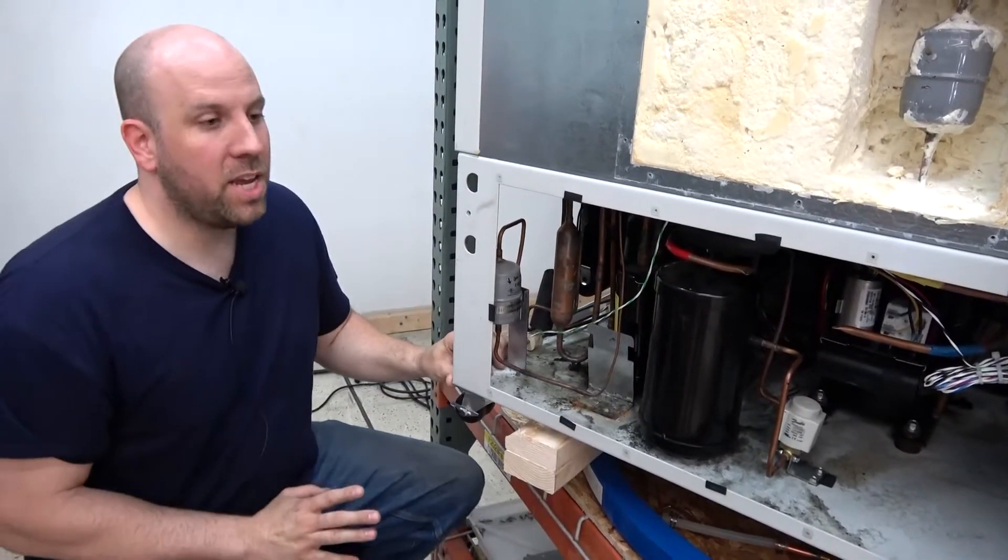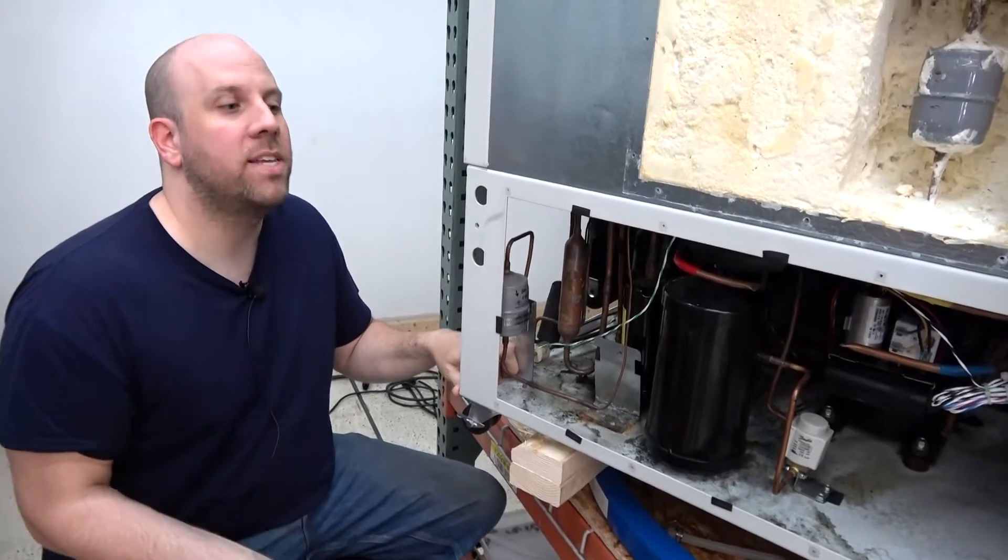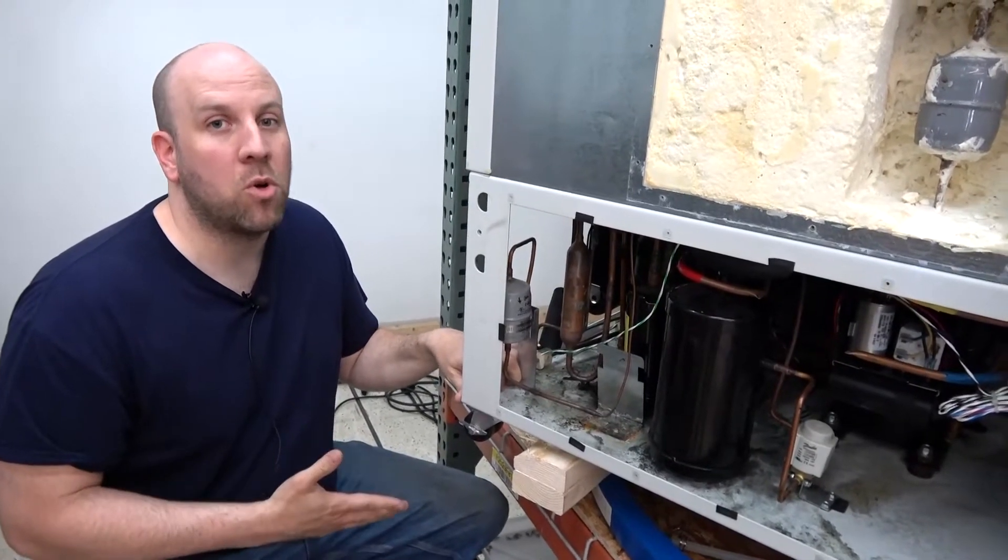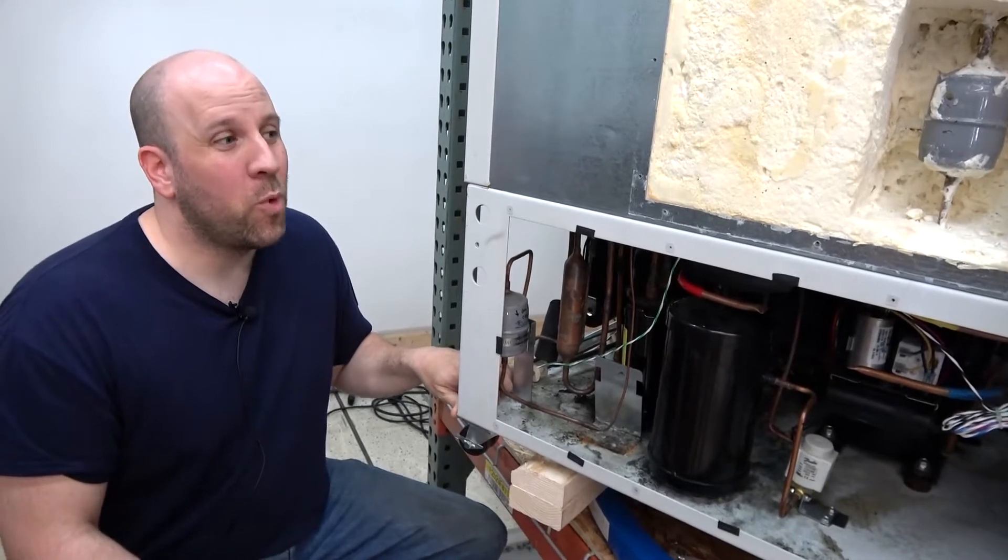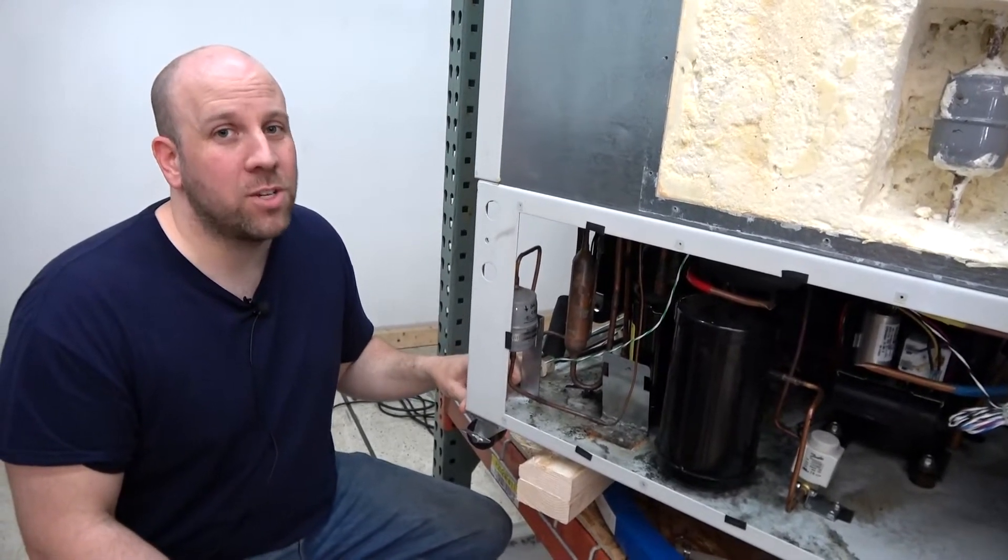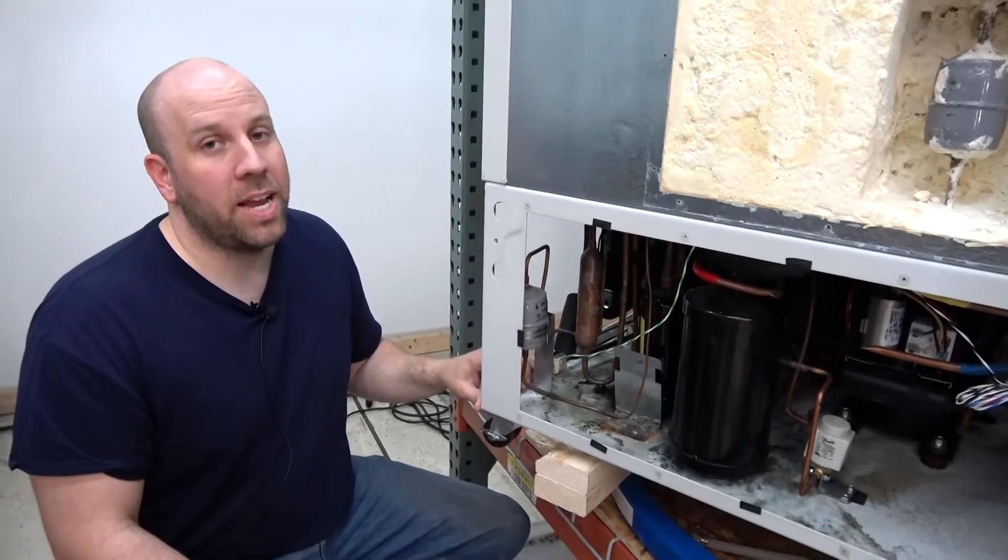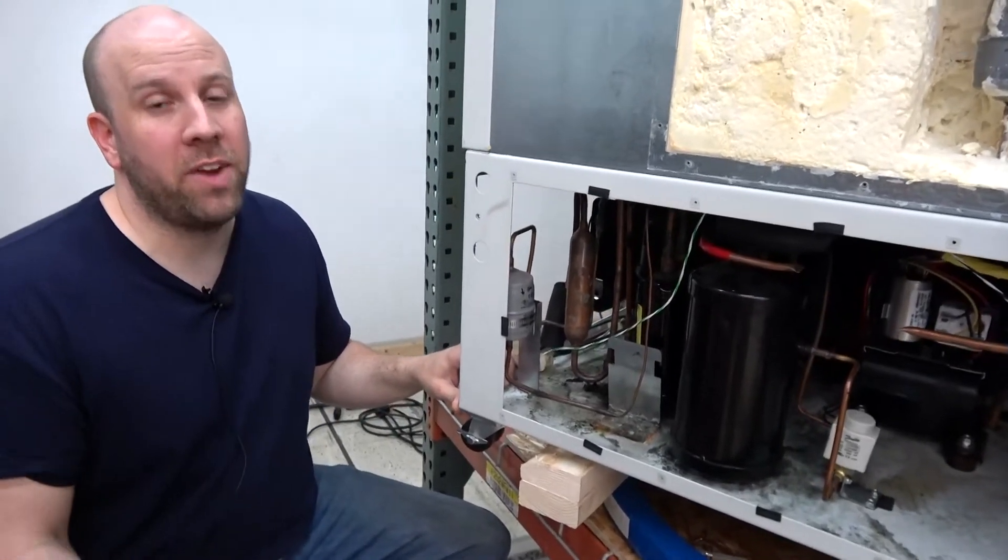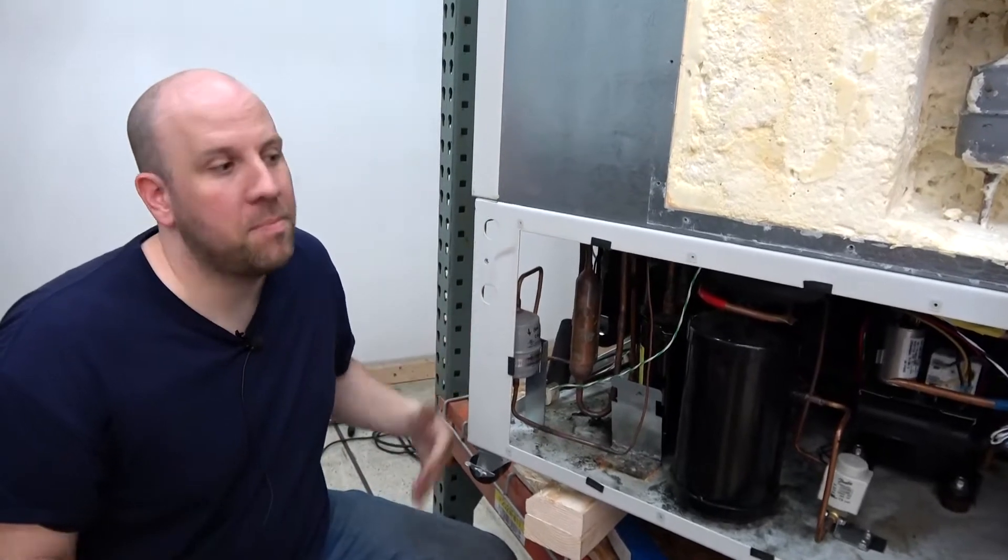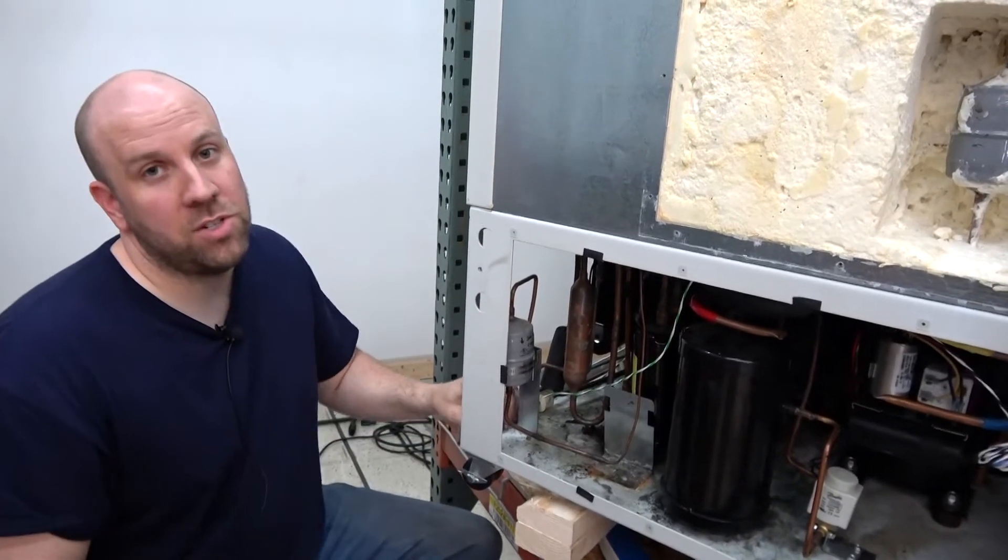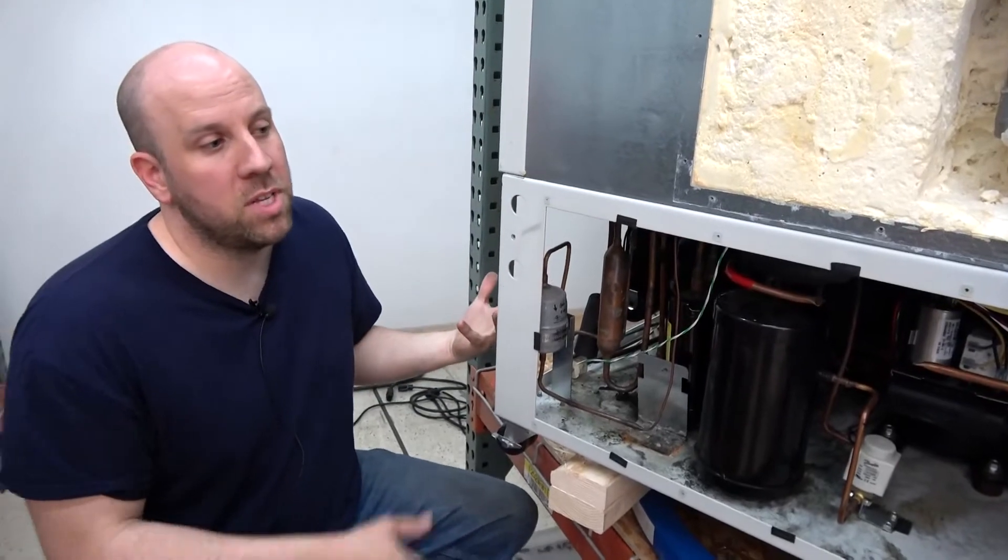So the second stage we test the same way, except we run the whole thing and see how cold it gets. If it doesn't reach really close to manufacturers design temperatures, like we shoot for negative 86 because it's a negative 86 degree freezer, if it doesn't do that, generally we do the flush. That's how we refurbish these.